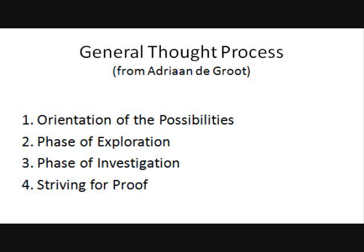A good thought process has four steps. The first is the orientation of the possibilities — getting a general lay of the land, looking at what imbalances are in the position (to use International Master Jeremy Silman's phrase), and seeing what the possibilities are. The second phase is one of exploration, also known as finding candidate moves: what moves will help you reach those possibilities? The phase of investigation is where we actually calculate each of those candidates. Striving for proof is where we double-check and determine which candidate, after calculating and assessing the resulting positions, is actually the best move.